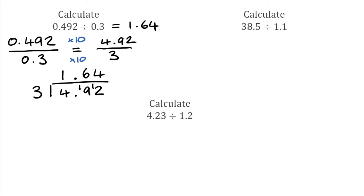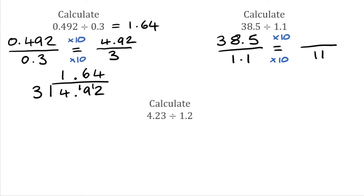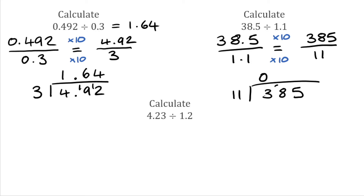For the next question we've got 38.5 over 1.1. Again we want our equivalent fraction with a whole number on the bottom, so we're going to multiply by 10. So 1.1 multiplied by 10 is 11, and 38.5 multiplied by 10 is 385. Our calculation is now 385 divided by 11. 11s into 3 don't go so I carry the 3 over. 11s into 38 go 3 times giving 33 with a remainder of 5. And finally 11s into 55 go exactly 5 times. So our answer is 35.